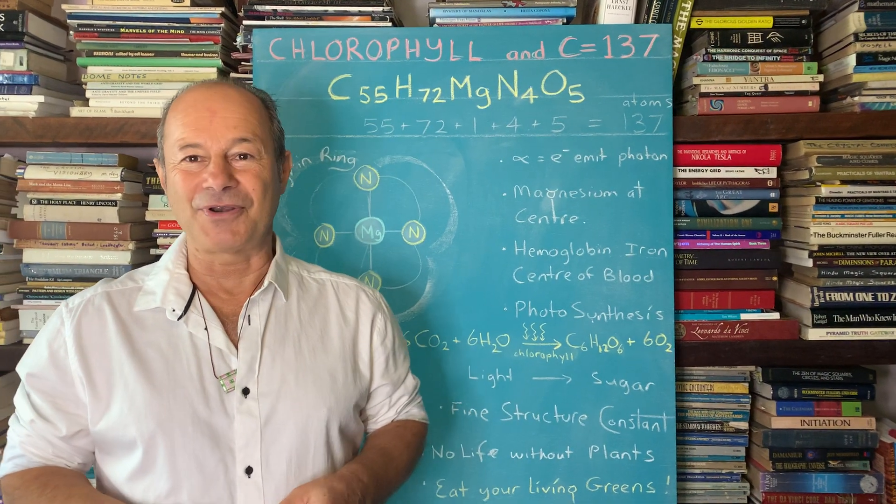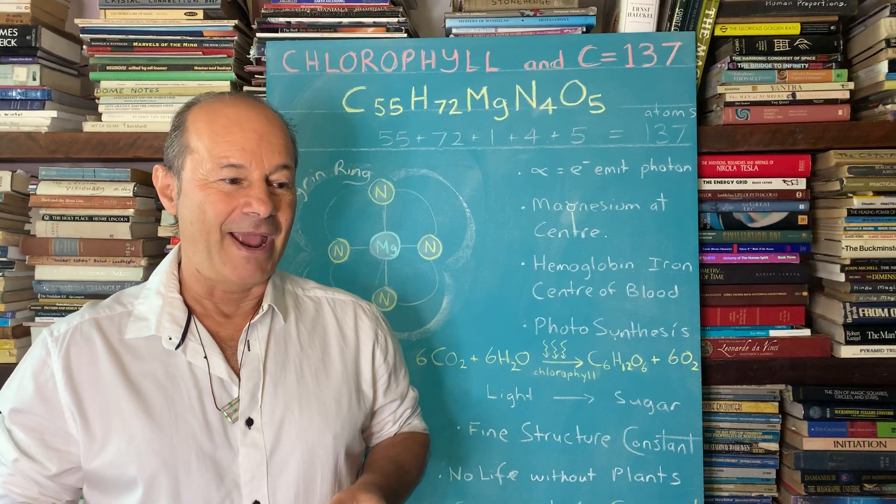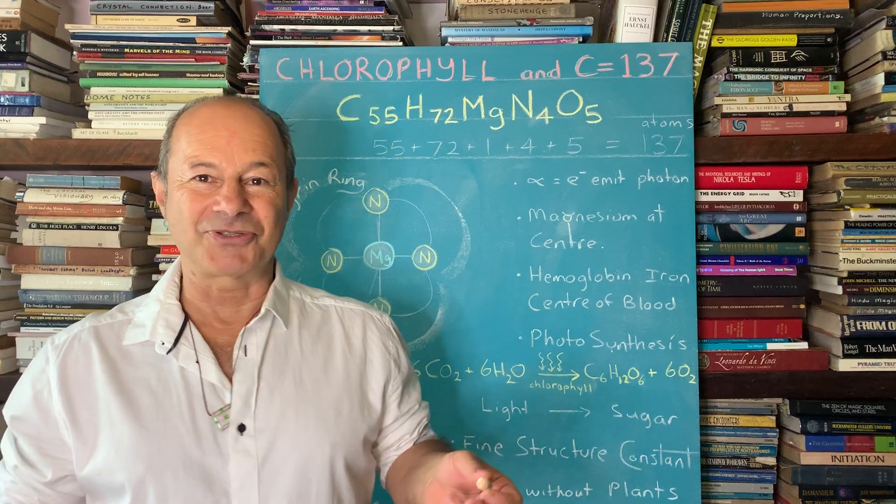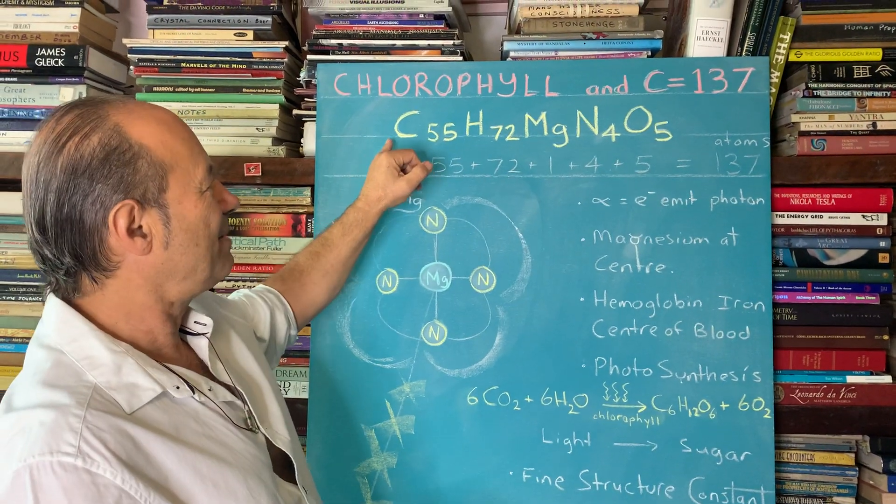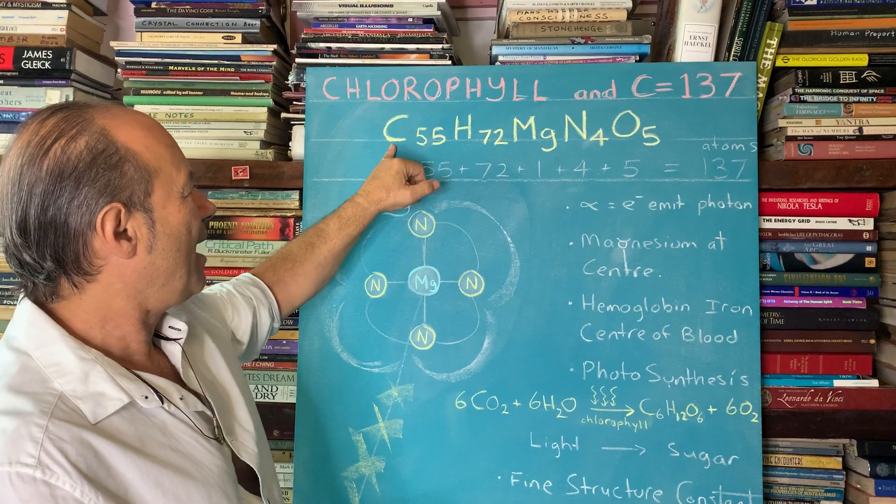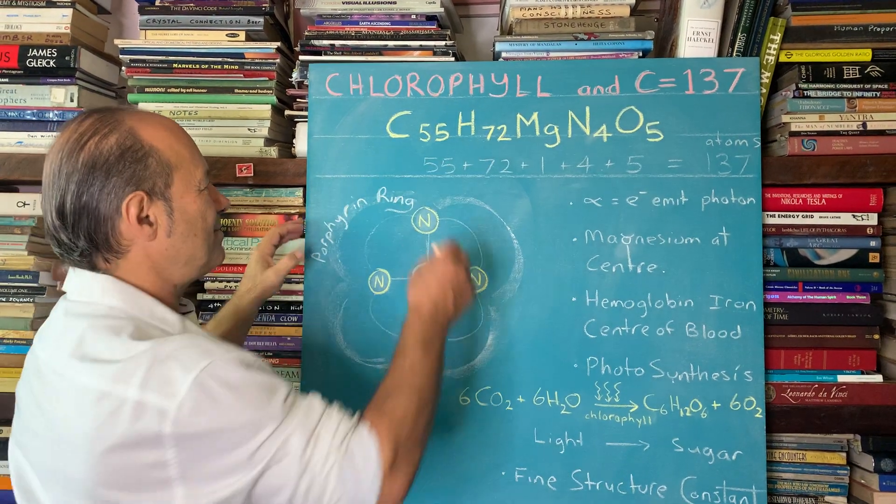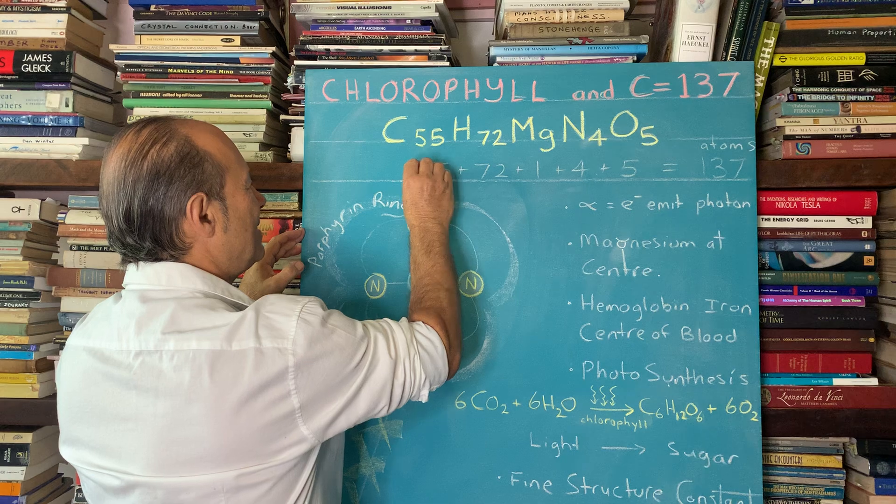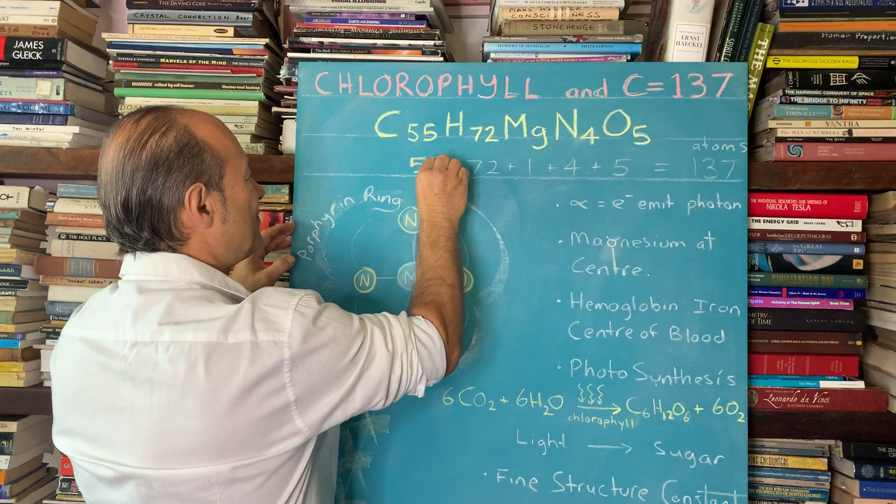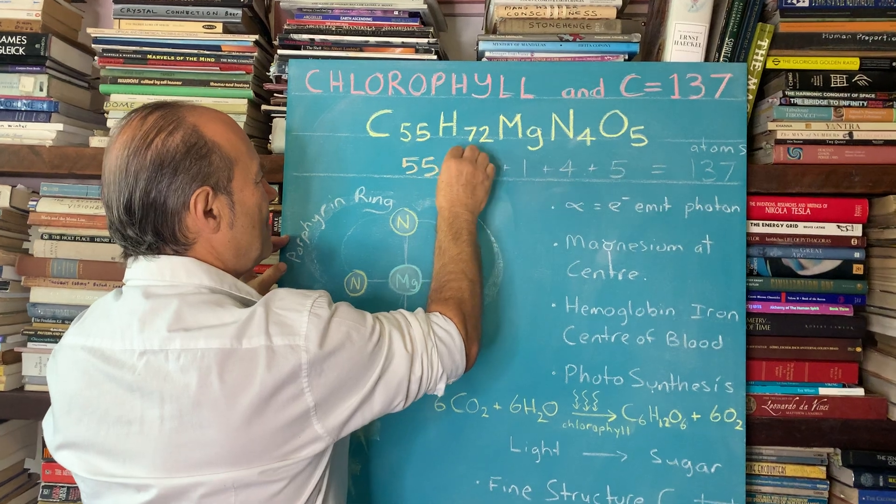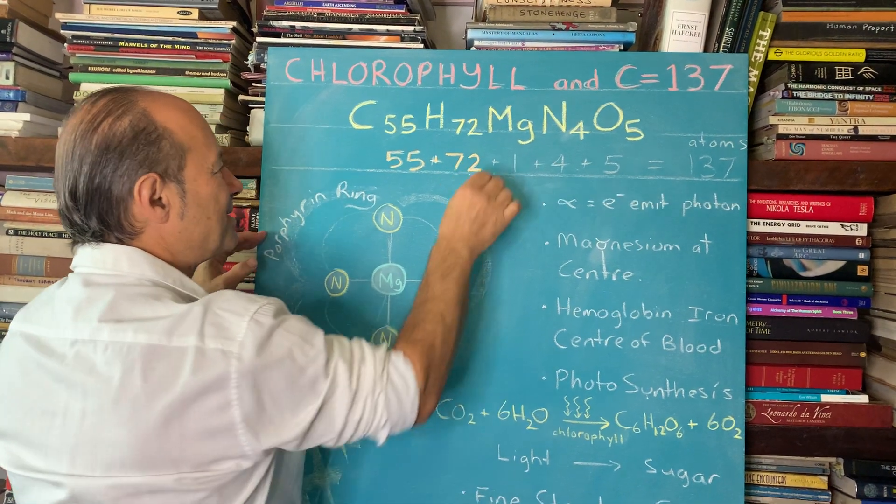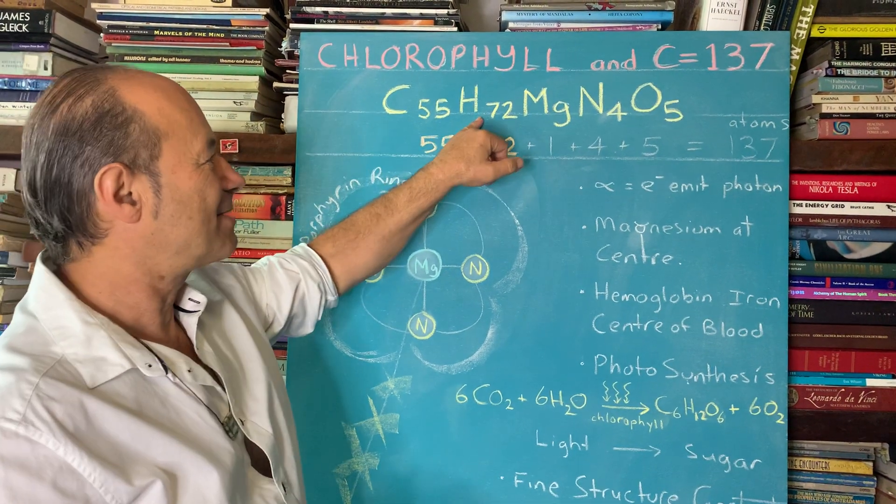As you know, chlorophyll is often known as green blood. And maybe if you studied it at school, you know that it actually has a chemical formula. So I'm just going to read the formula. So it's carbon, there's 55 atoms actually. So carbon has 55, hydrogen has 72. We're going to add up all the individual atoms that constitute this green blood.